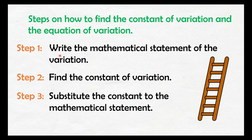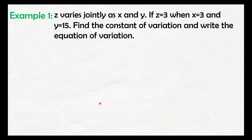Kagaya lang din yung previous video lesson natin. Ito yung mga steps on how to find the constant of variation at equation of variation. Step one: write the mathematical statement of the variation. Step two: find the constant of variation. And step three: substitute the constant to the mathematical statement. Example number one: Z varies jointly as X and Y. If Z is equal to 3, when X equals 3, and Y equals 15, find the constant of variation and write the equation of variation. Hahanapin muna natin yung constant ng variation para makuha natin yung equation ng variation.